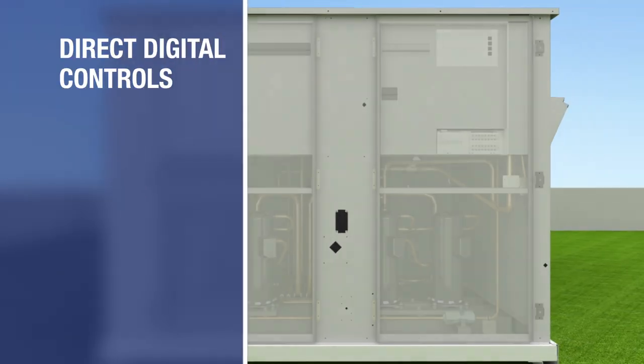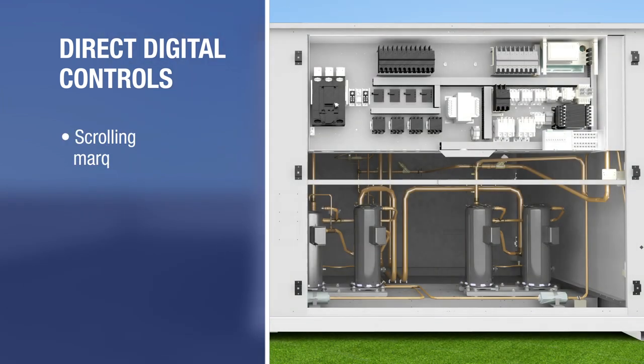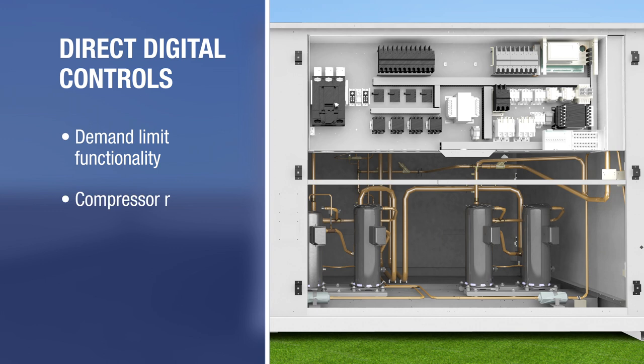Carrier's direct digital controls provide powerful integrated management of unit performance and include an easy-to-use scrolling marquee display, service diagnostics with simple error codes, run test capabilities, demand-limit functionality compressor protection, and BACnet communication.